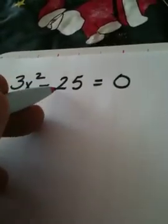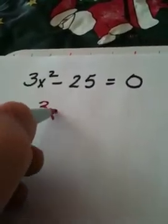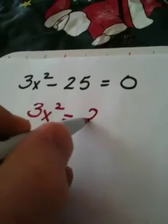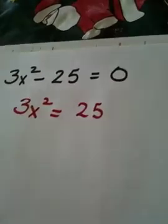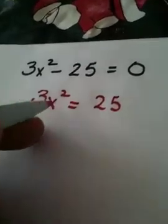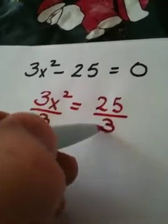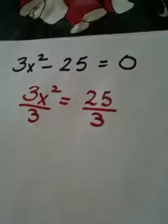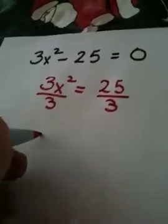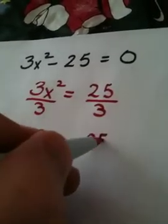So my first step here is to add 25 to both sides, so I end up getting 3x² equals 25. Remember your goal, before you can use the square root property, you need to have the squared term alone. My next step is to divide by 3. Unfortunately, 25 is not divisible by 3, so we just leave it as a fraction. x² is equal to 25 over 3.